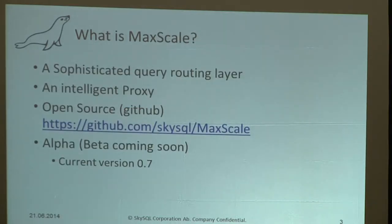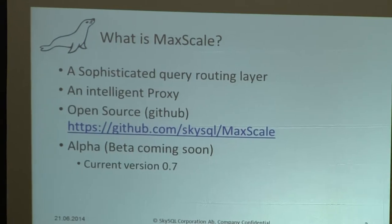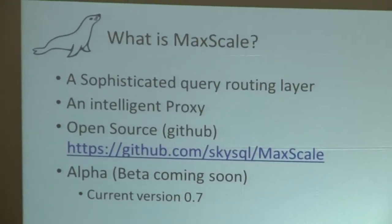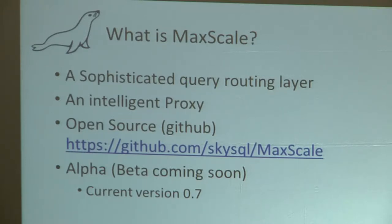The topic of today is MaxScale. What is MaxScale? It's a query routing layer, basically a proxy. We call it an intelligent proxy because it's a bit more intelligent than your average proxy server, meaning you can do more things that a normal proxy can't do. Because this is a proxy very specific to MySQL or MariaDB, which has pros and cons. The pros being that we can do a lot of things that most proxies can't because we're focusing on a specific type of traffic. You can't use this proxy for much else than MySQL queries, at least at the moment.